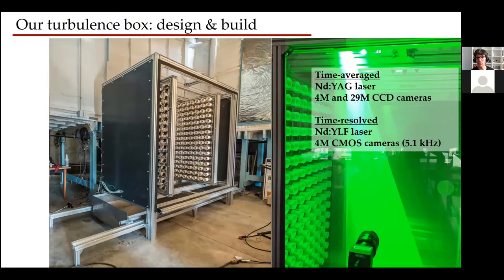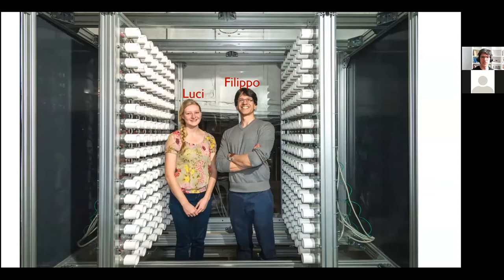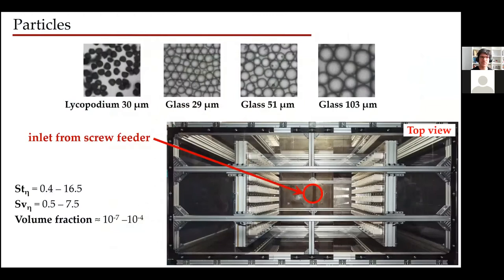We shine lasers — high-speed lasers if we want to resolve all temporal scales, coupled with high-speed cameras, typically around five kilohertz. For time-averaged results we use double-pulse lasers for standard PIV, maximizing spatial resolution. We use glass beads as particles, but sometimes also lycopodium spores, which nature has beautifully selected at about 30 microns — remarkably narrow size distribution. We drop particles through a vertical chute a few meters long so they reach terminal velocity before entering the turbulent region in the chamber.